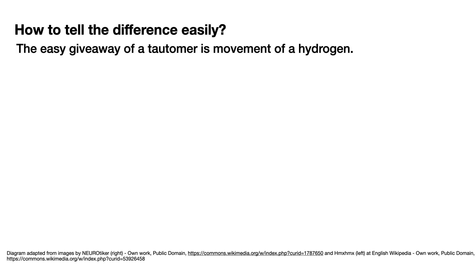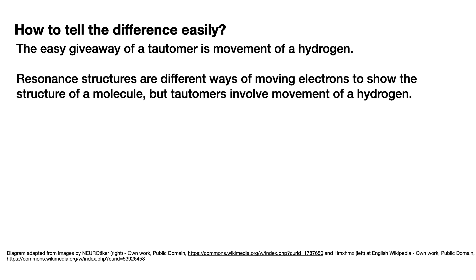How do you easily tell the difference? The easy giveaway of a tautomer, in this case prototropy, is the movement of a hydrogen. Resonance structures are different ways of moving electrons to show the structure of a molecule — neither of them are the true structure; the true structure is the resonance hybrid. But tautomers involve movement of a hydrogen, so this is actually a reaction. You can draw it with a curly arrow mechanism — it's two different real molecules.